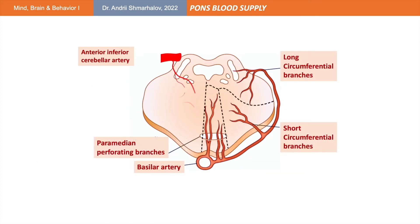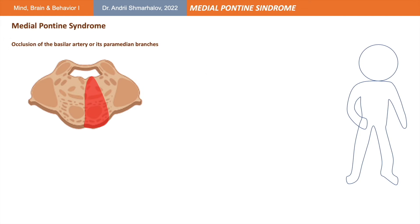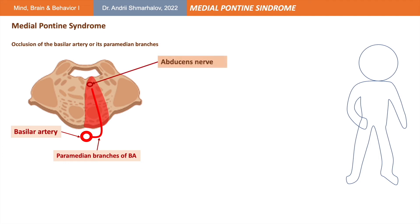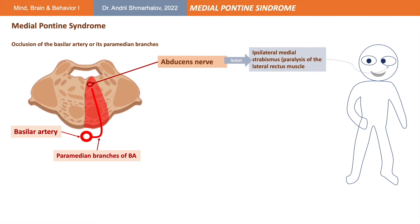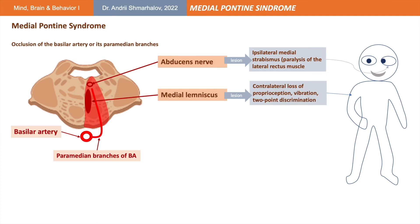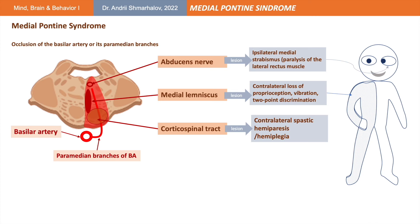Using the same approach, we move to the pons, which receives blood supply from the basilar artery centrally and the anterior inferior cerebellar artery laterally. If there is occlusion of the basilar artery or its paramedian branches, we are talking about the medial pontine syndrome, which involves the central structures of the pons such as the abducens nerve, damage of which may result in ipsilateral medial strabismus due to the paralysis of the lateral rectus muscle — it will look like the eye is moving towards the nose. Close to the midline, the medial lemniscus is situated and its lesion will lead to contralateral loss of proprioception, vibration, and two-point discrimination from the limbs and the trunk. Also, as in the medial medullary syndrome, we can see involvement of the corticospinal tract located in the ventral pons, and the lesion of this tract will lead to contralateral spastic hemiparesis.